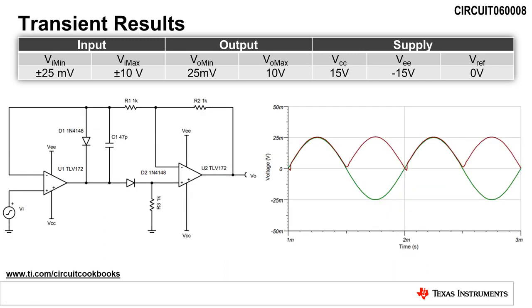A transient analysis of this circuit with a 1 kilohertz plus minus 25 millivolt sinusoidal input signal yields a rectified output signal with a peak amplitude of 25 millivolts. This verifies functionality of the circuit at minimum input.